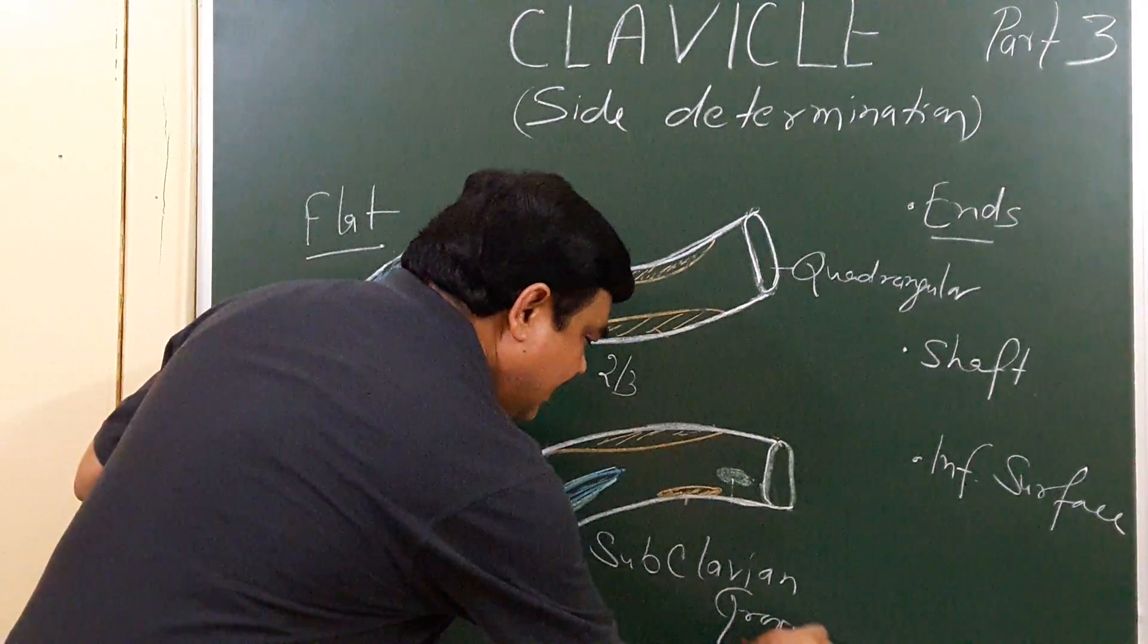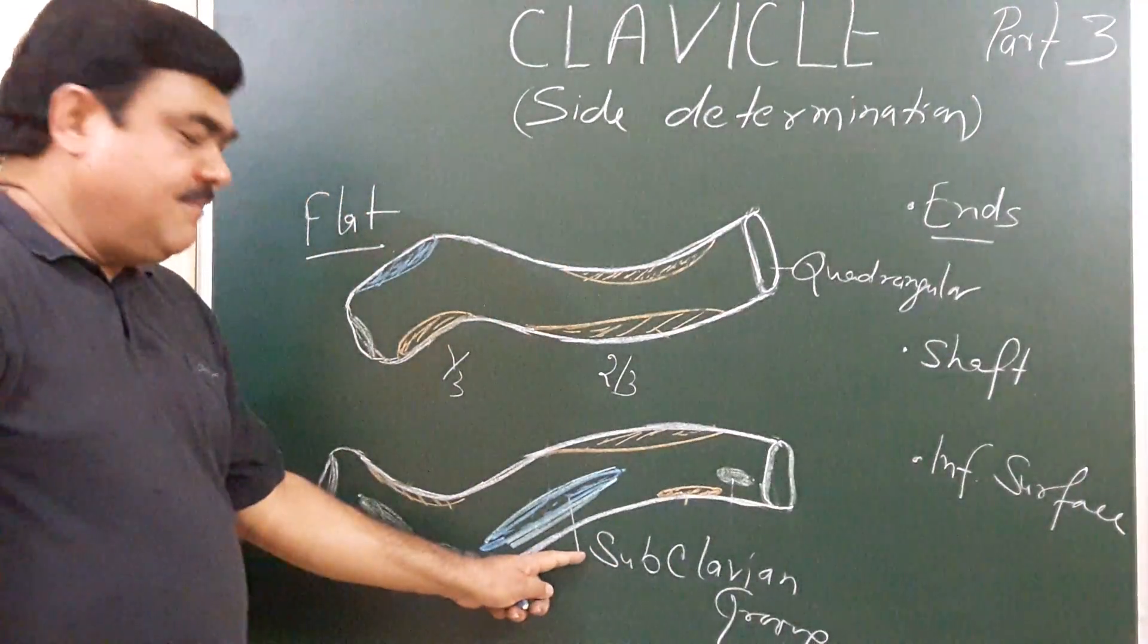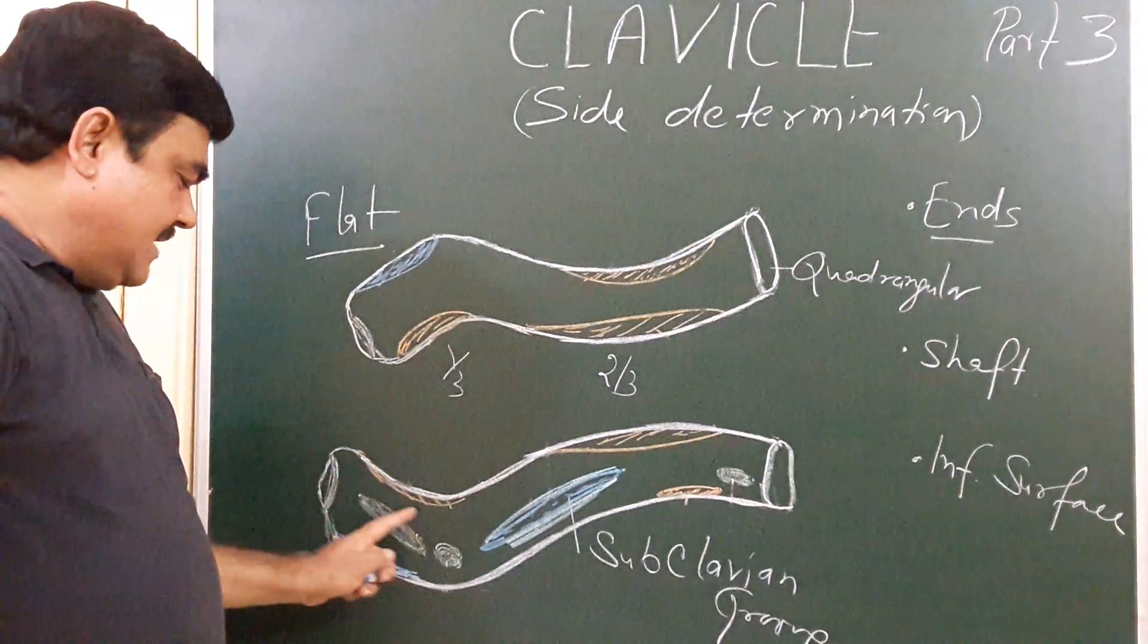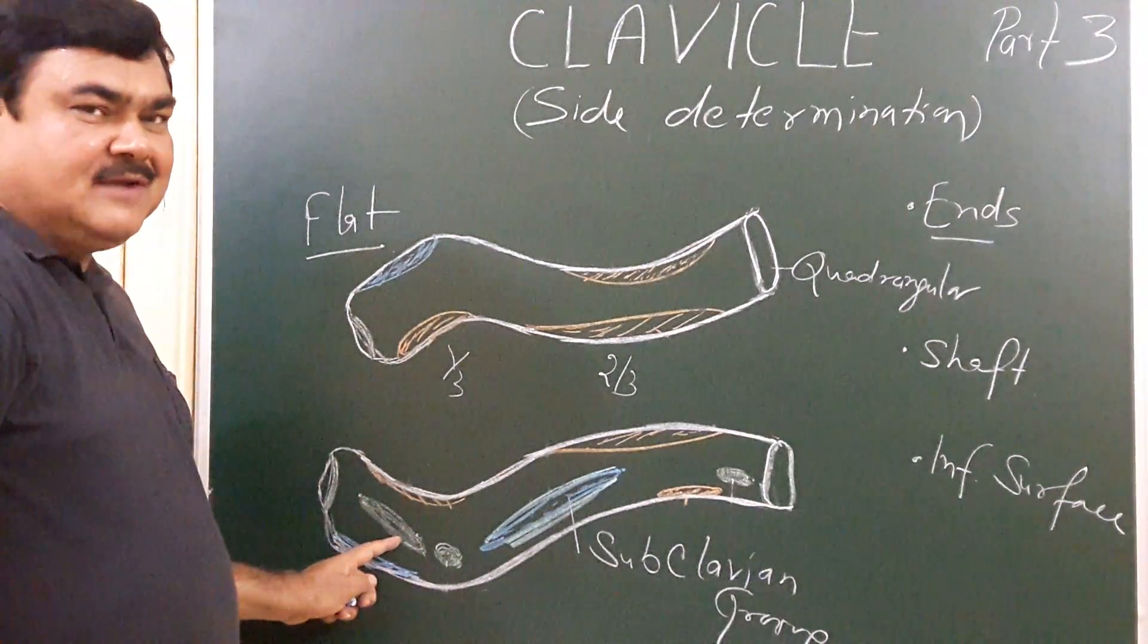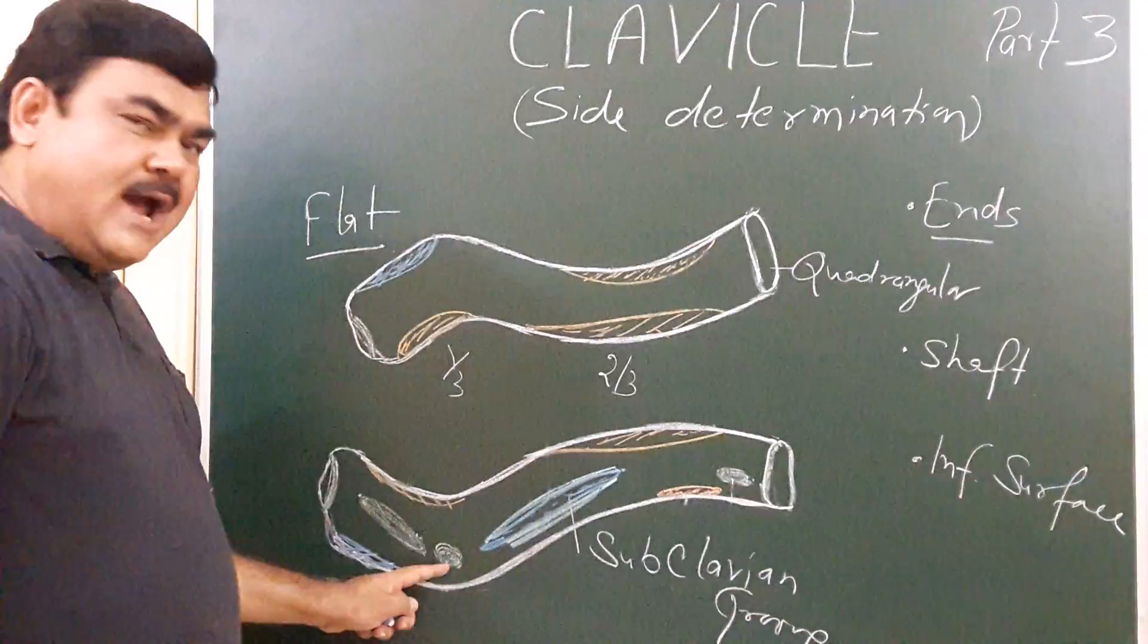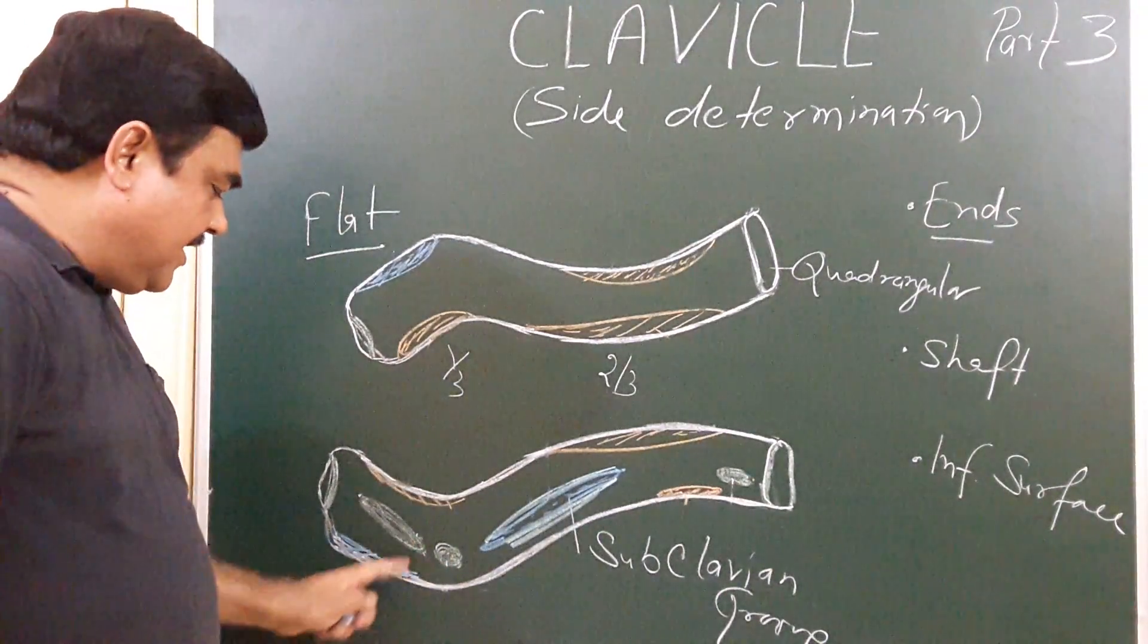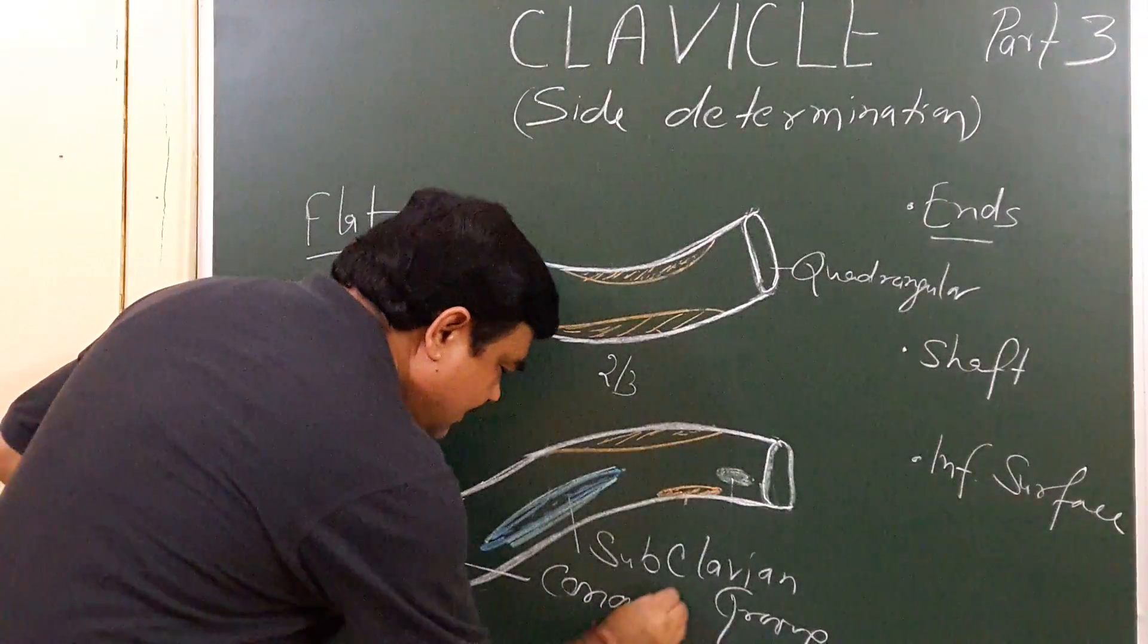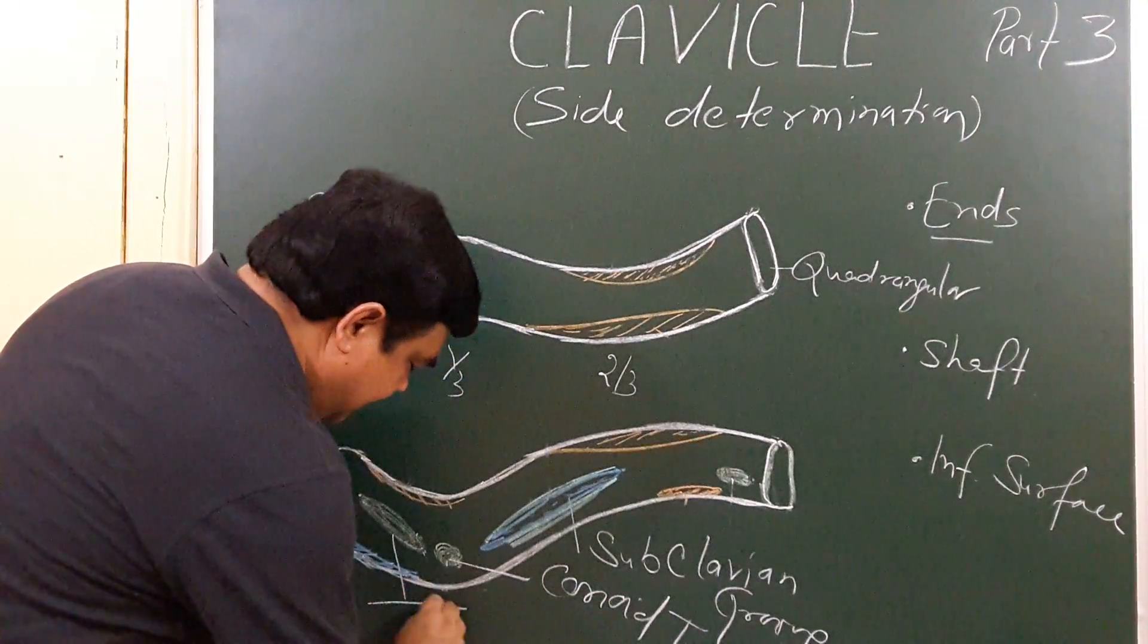On the inferior surface, you can see these two things which are present in the lateral part: conoid tubercle and trapezoid ridge.